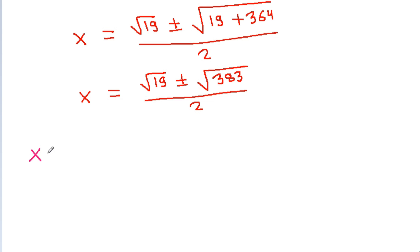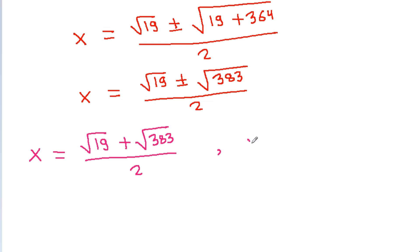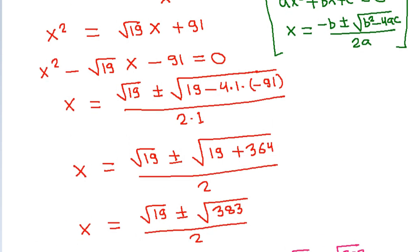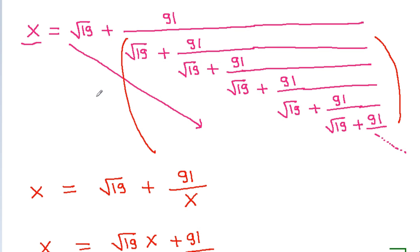So we get x is equal to square root of 19 plus square root of 383 by 2, and x is equal to square root of 19 minus square root of 383 by 2. This first value is positive and this second value is negative. And if we see here, every term is positive, meaning x should be positive.